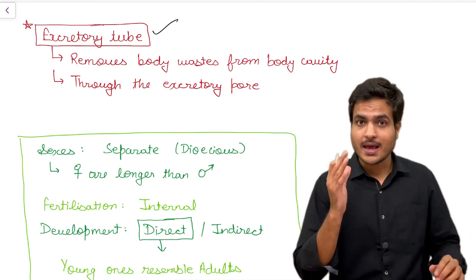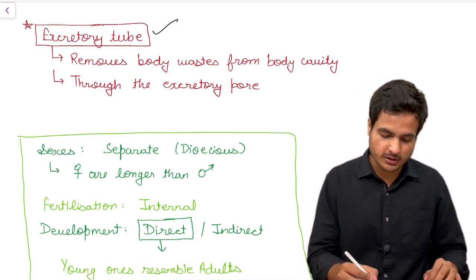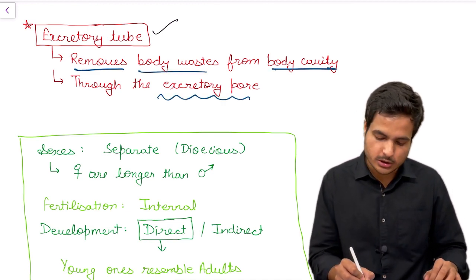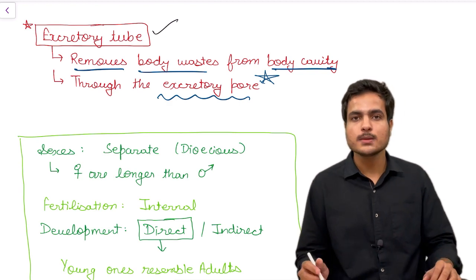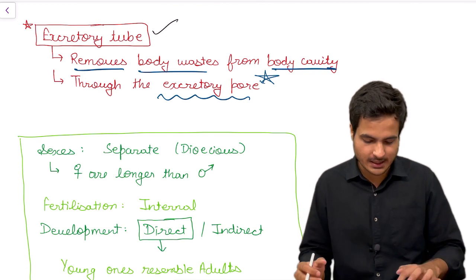In phylum Aschelminthes, the fifth phylum, we have excretory tubes for this purpose which removes body waste from the body cavity through excretory pore. This excretory tube removes waste through a pore which is called excretory pore.